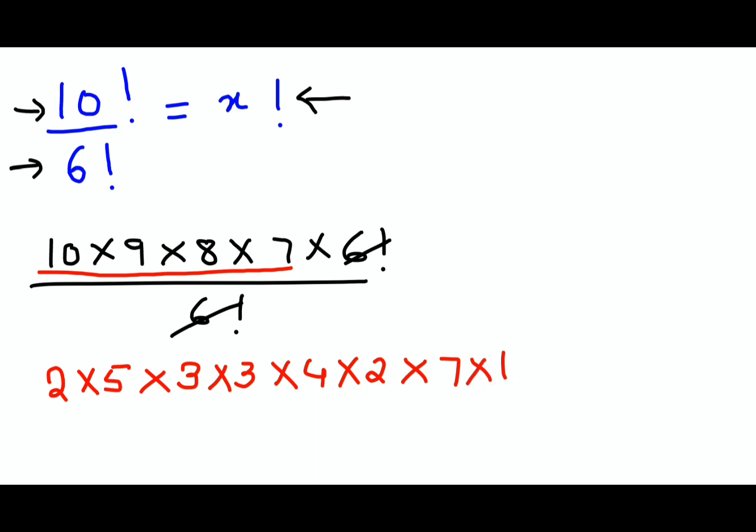Now the thing is we need to make sure this answer comes out in the form of a factorial because everything is equal to x factorial. So if the answer for this comes out in factorial, the factorials will cancel and the leftover number will be the value for your x.